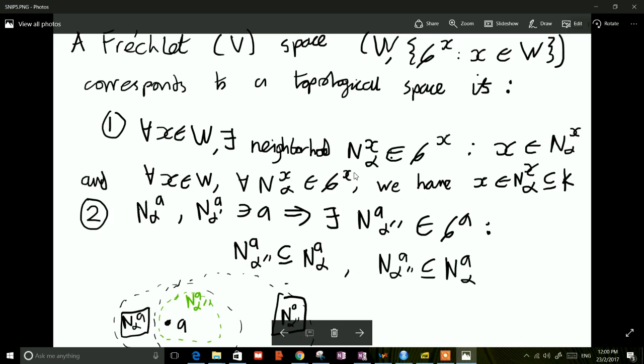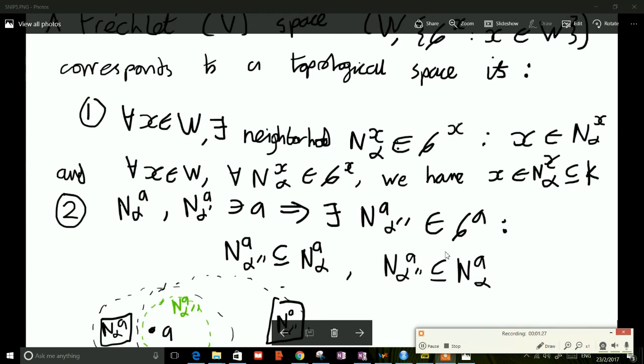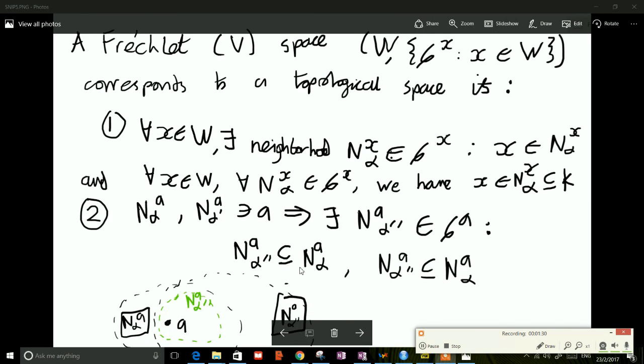Condition 2 basically says that given two neighborhoods that both contain, both neighborhoods of point A, then there's going to exist another neighborhood—here I've called it N_A^α''—which is also a neighborhood of A and it's contained within the previous two neighborhoods of A.